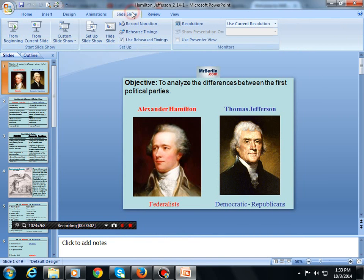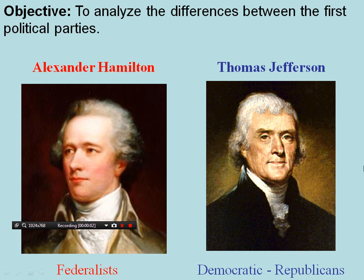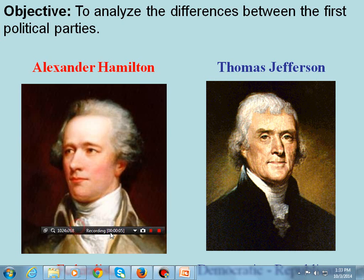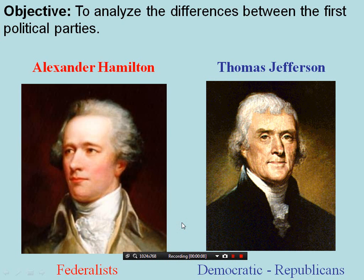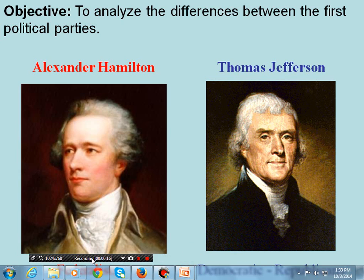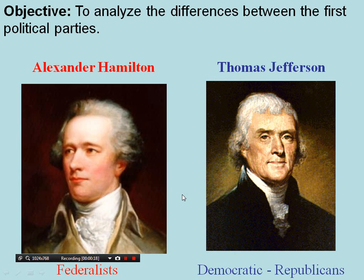Let's take a look at the first political parties and how they were formed under the new Constitution. You have Alexander Hamilton, who was really a leader of the Federalist Party, and then Thomas Jefferson of the Democratic-Republican Party, or the Anti-Federalist, you can call him.